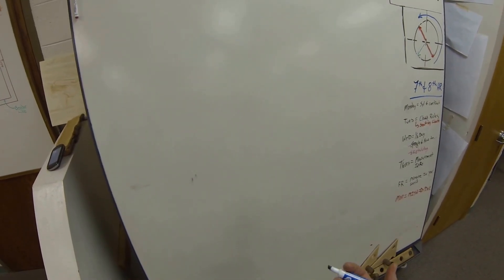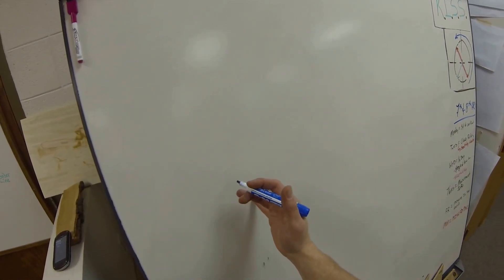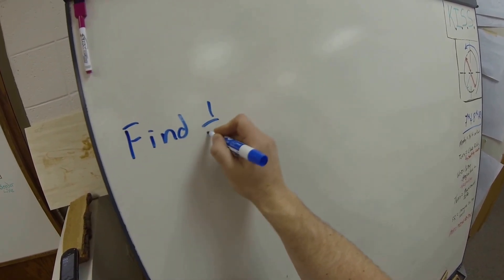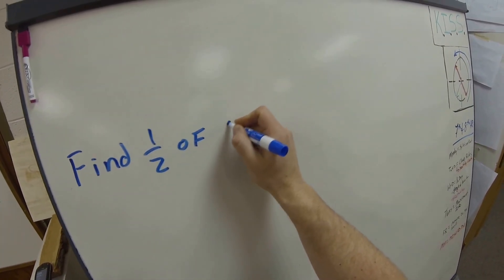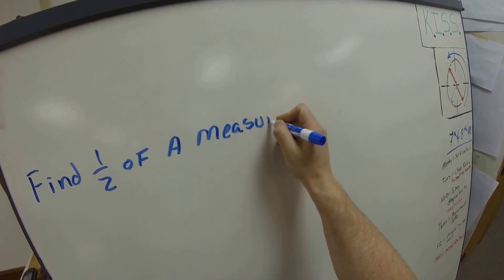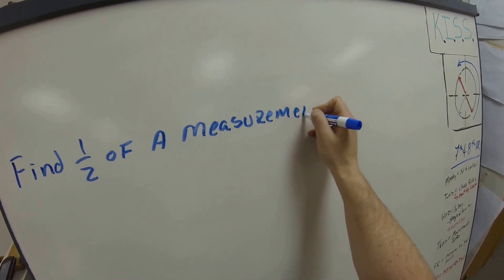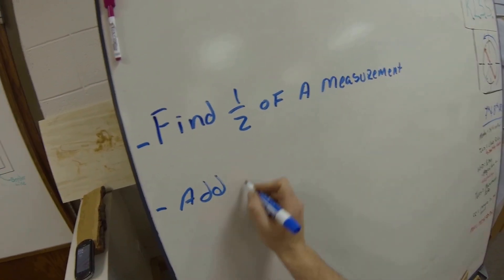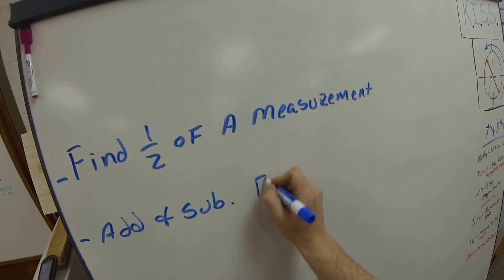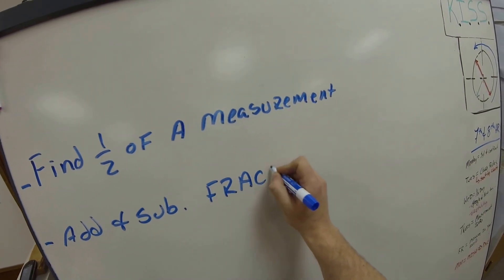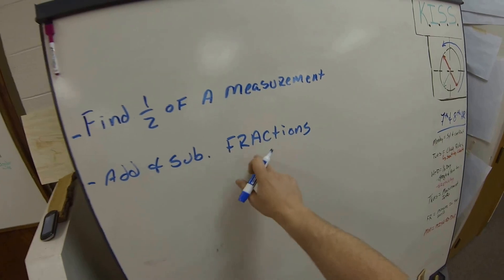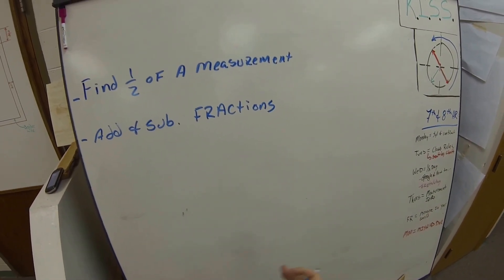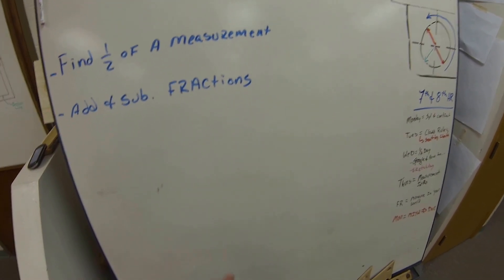All right students, what we're going to do today is a couple of things for our measurements. We are going to find half of a measurement, and we are also going to add and subtract fractions. So in your notebooks, you're going to want to place that underneath a category or subheading for both of those.